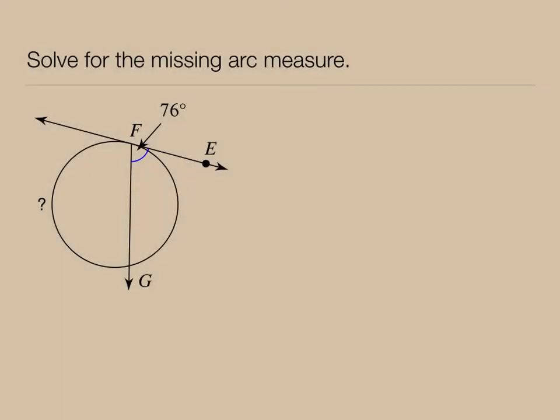Example 1 asks us to solve for the missing arc measure, denoted by the question mark. Let's use our vocabulary from the previous slide. We know that FG is a secant, FE is a tangent, and point F is the point of tangency.